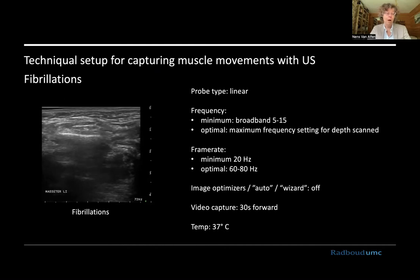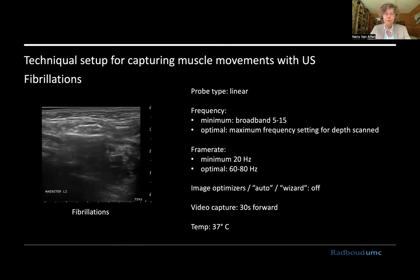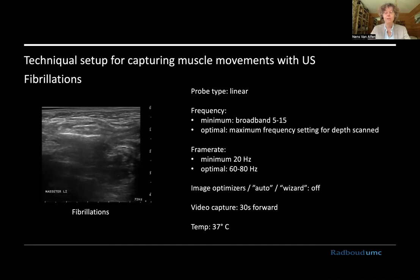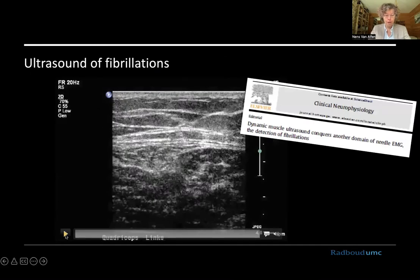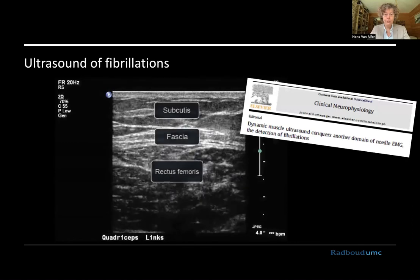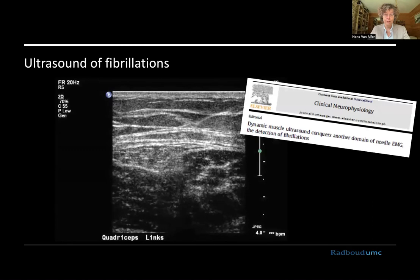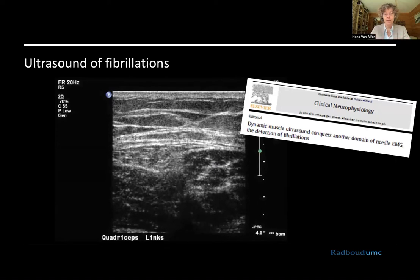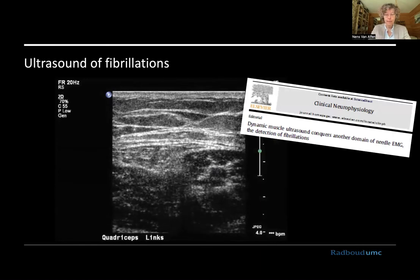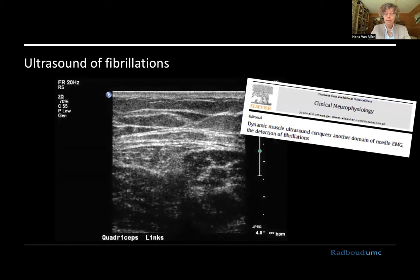Usually we set the video capture to 30 seconds, but you could also choose 10 seconds or a minute. Something that is not maybe very well known but very important: warm the patient to 37 degrees body temperature, because fibrillations will disappear at 32 degrees centigrade. You will miss at least 30% of these fibs if you cool down to the regular temperature used for electrodiagnostic studies. Here is a first publication on the topic, showing subcutis, fascia, and rectus femoris in a patient with acute onset myositis. The skin and subcutaneous layer are still — only the muscle below is fibrillating.